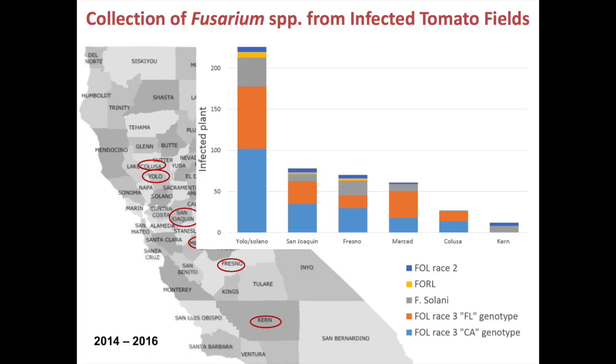The most important way to manage it is resistant variety. For fusarium wilt, you have resistant varieties to all three races. For fusarium crown root rot, you have varieties that are resistant or tolerant to it. The fusarium fungus does not produce millions of spores in resistant plants — they just colonize the roots and sustain themselves. So resistance is very, very crucial.